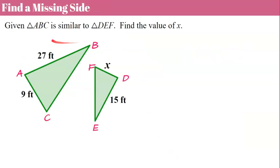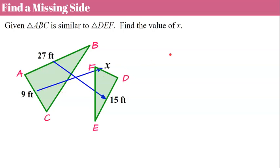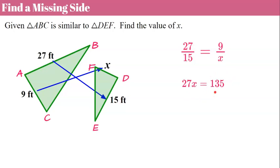Now let's talk about finding a missing side when we're told that our figures are similar. We're asked to find the value of x. Side AB corresponds to side DE. When I write my proportion, 27 forms a ratio with 15 and 9 to x. So 27 times x equals 9 times 15, which is 135. Divide both sides by 27 and x equals 5, telling me that missing side length DF is 5 feet.